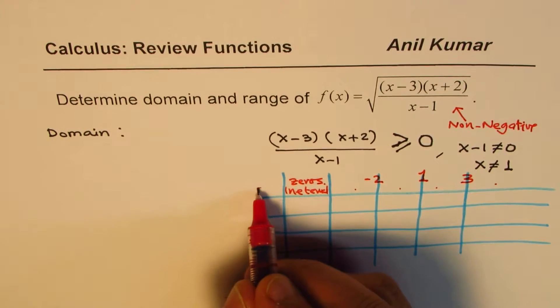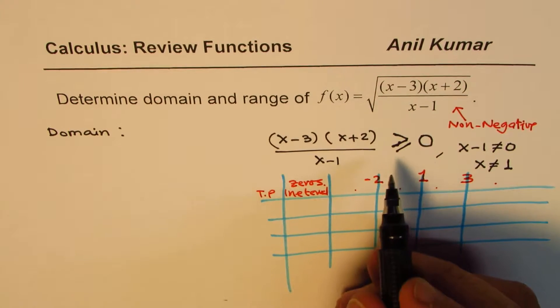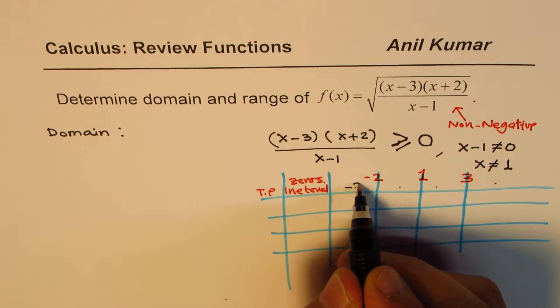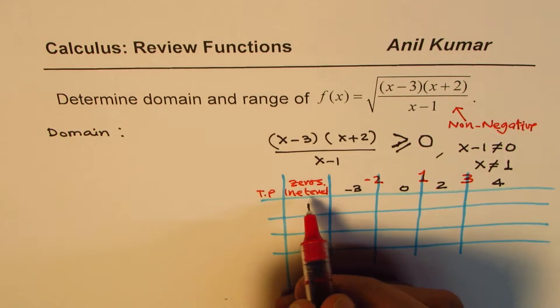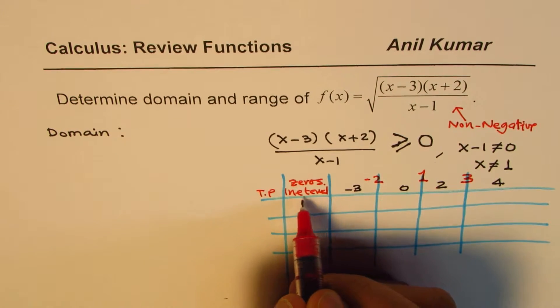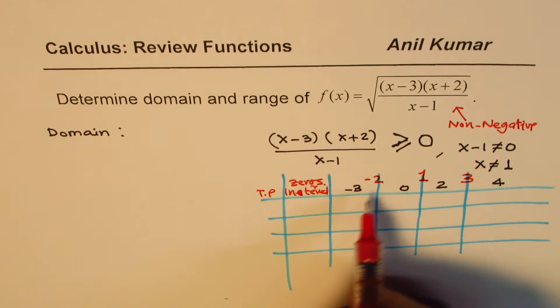So in these intervals, we will take test points just to check whether the given function is positive or negative in those intervals. So here we could take test point as minus 3, a test point of 0 is good here, test point of 2 and 4. So these are the test points in our intervals. Now, within these intervals, we are going to analyze these factors.